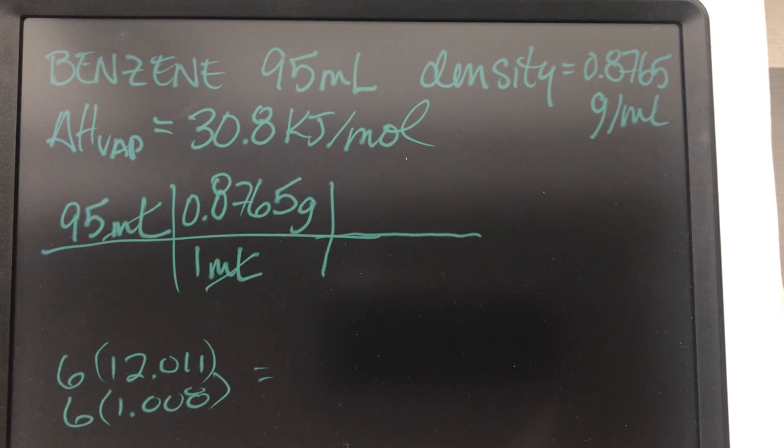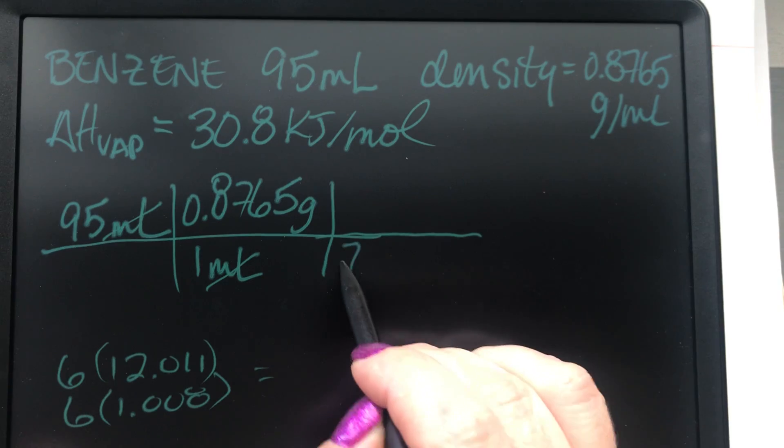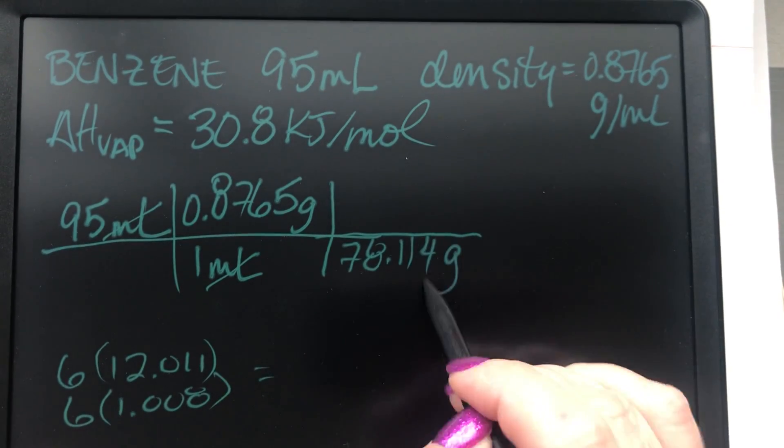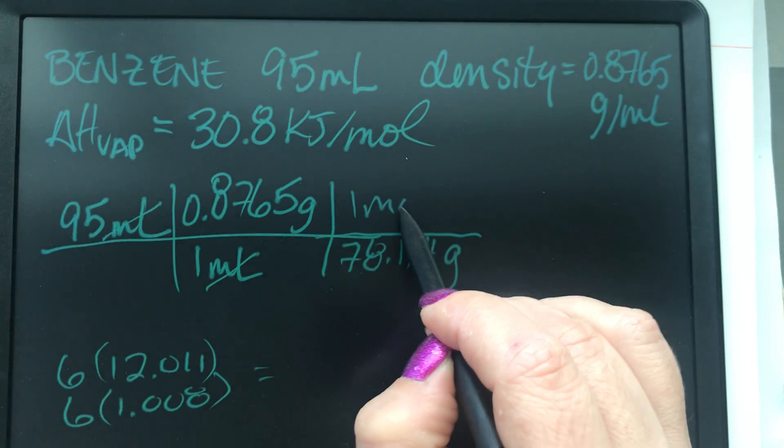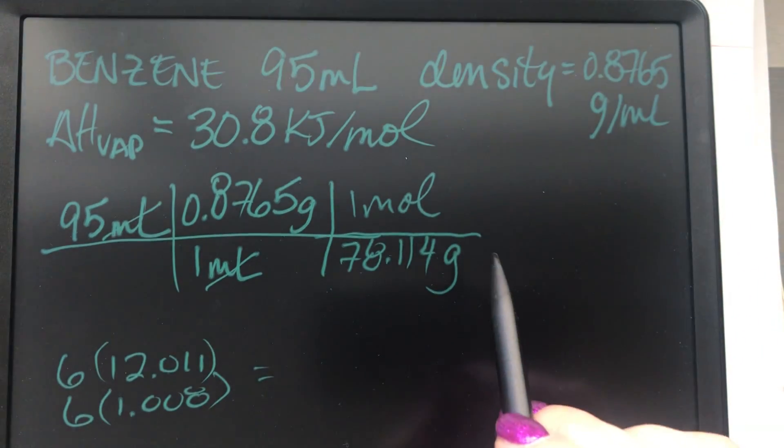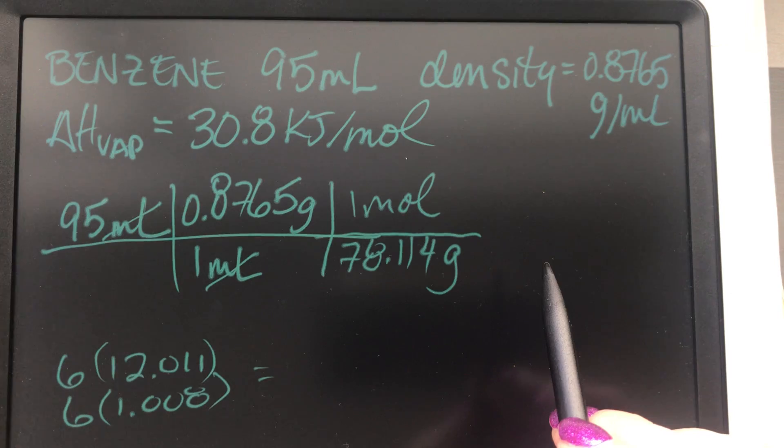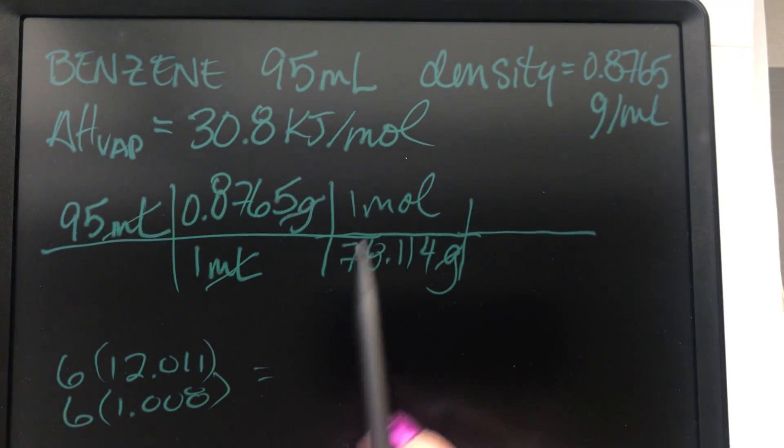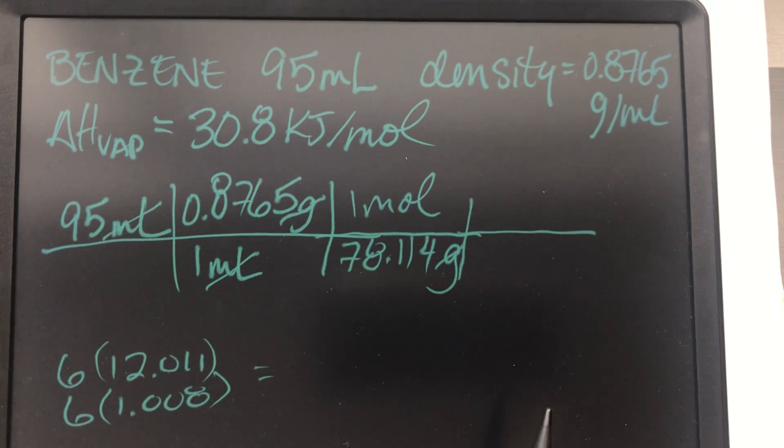I got 78.114. So we've got 78.114 grams for every one mole of benzene, right? And then I'll cancel out our grams. And what's the last step?